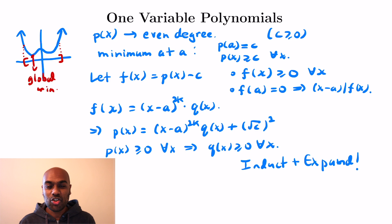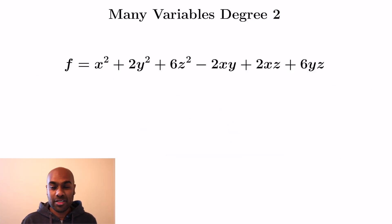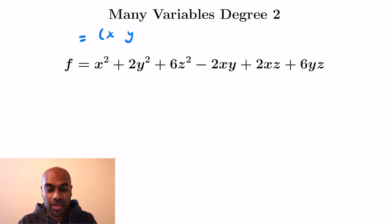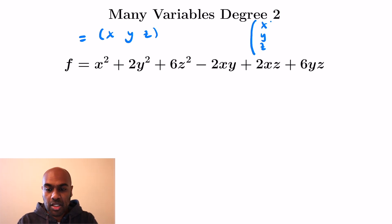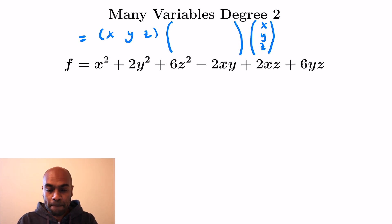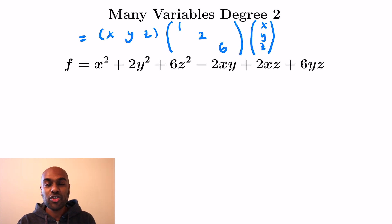This is not the only situation in which a non-negative polynomial is forced to be a sum of squares. Another example is where you have an arbitrary number of variables but the polynomial has degree 2. So we'll use this function f as motivation. We can write f as a matrix product with a row vector containing all the variables on the left, the column vector containing all the variables on the right, and a matrix in the middle. The matrix has as its diagonal entries the coefficients of the squares of the variables — so we have 1, 2, and 6 here.